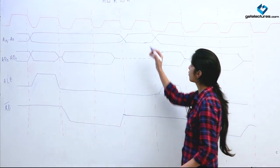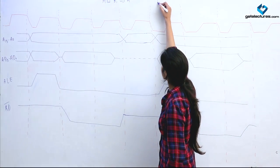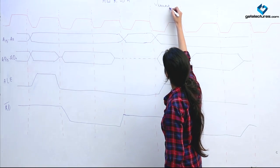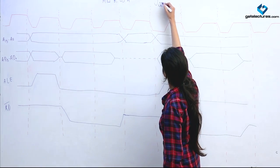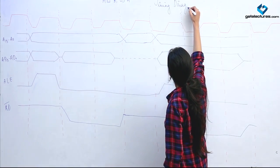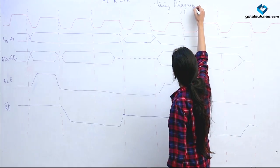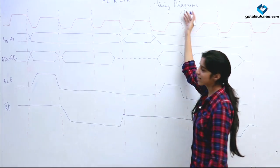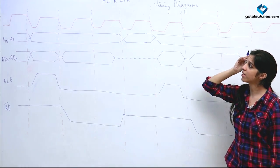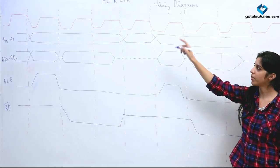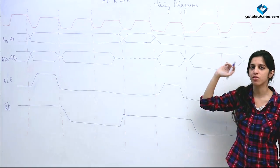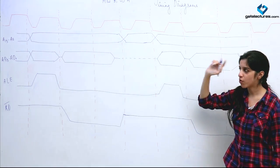Today we are going to look at timing diagrams. Basically in timing diagrams we are going to see that for a particular instruction how many clock cycles are going to be consumed.